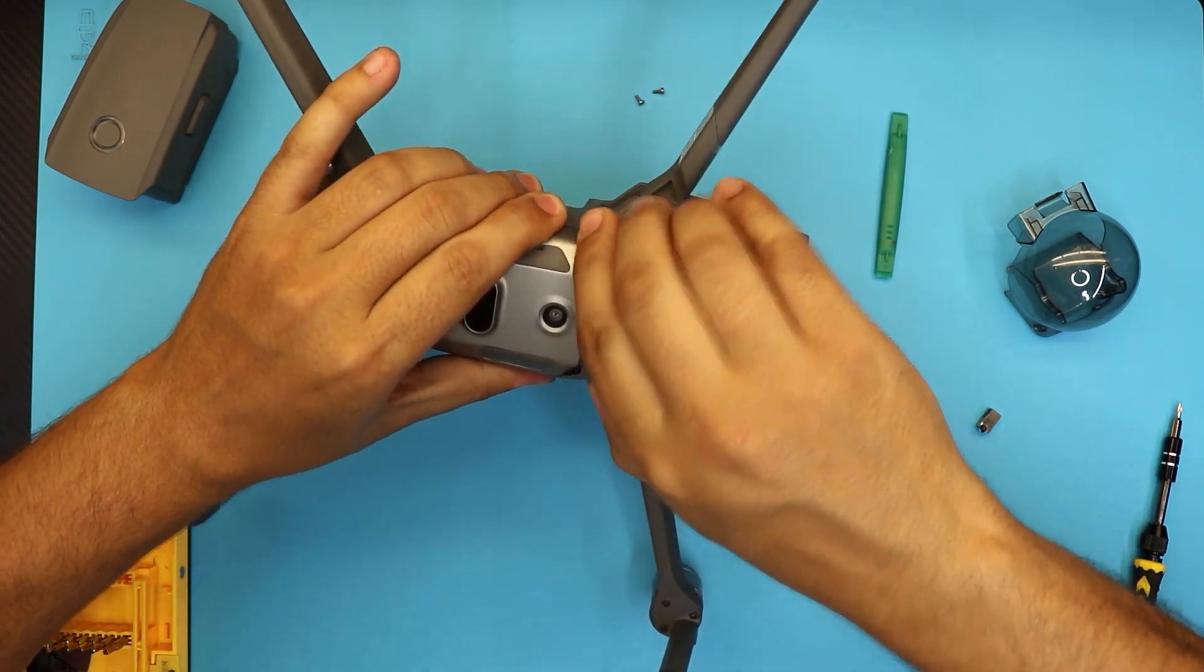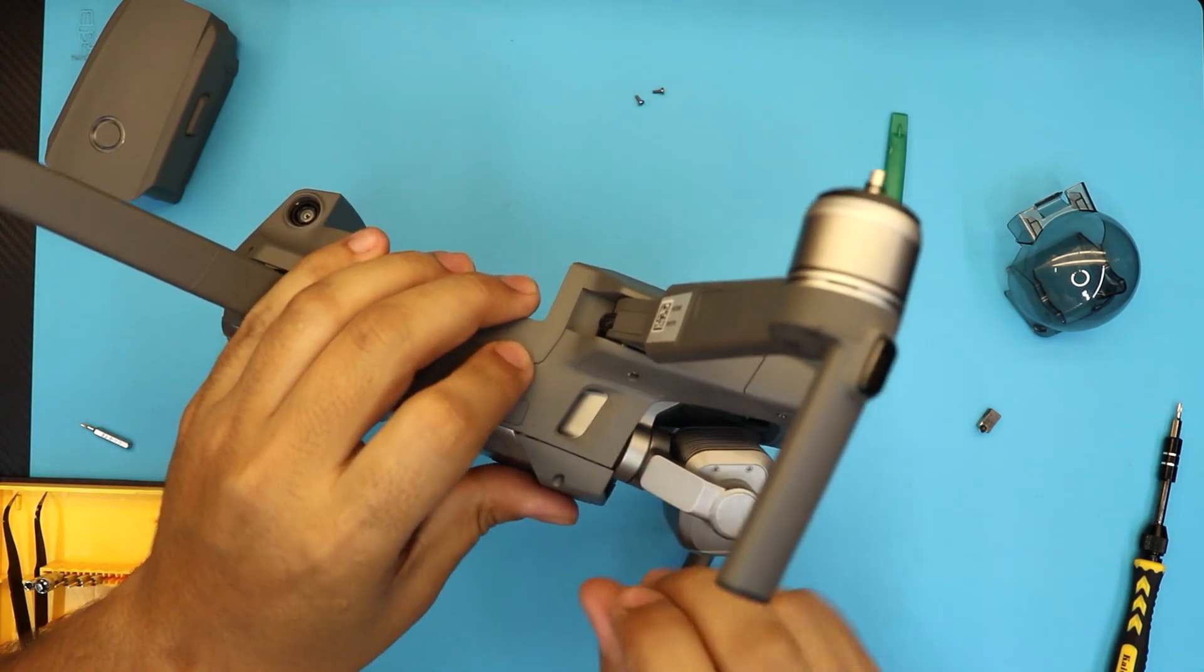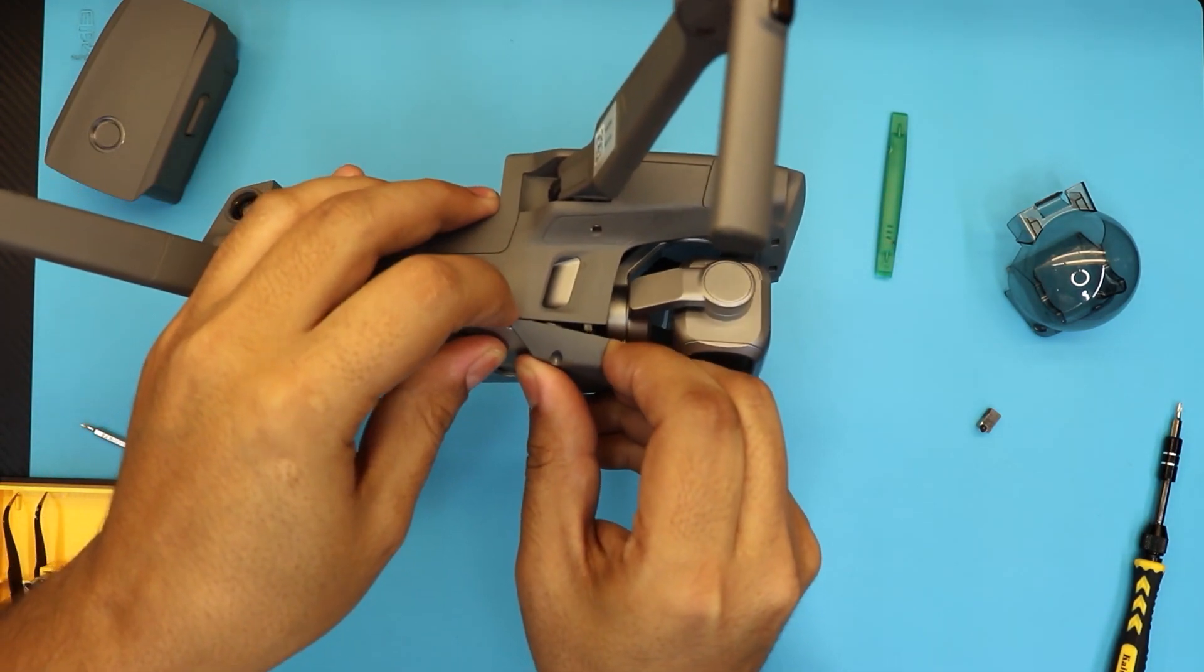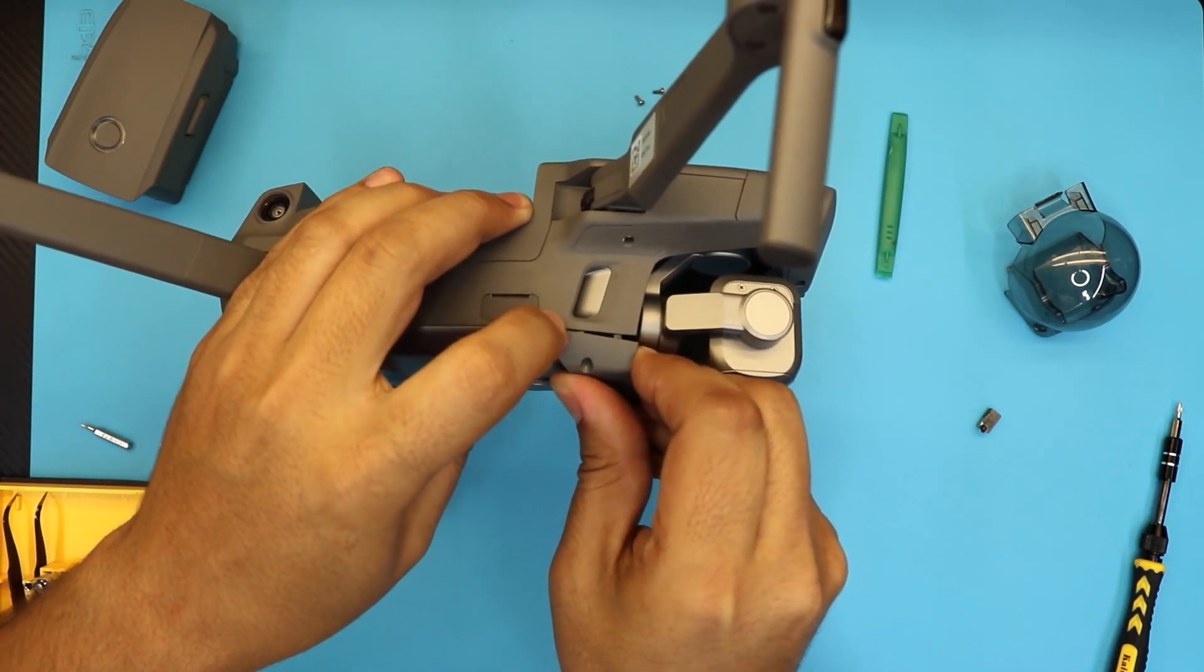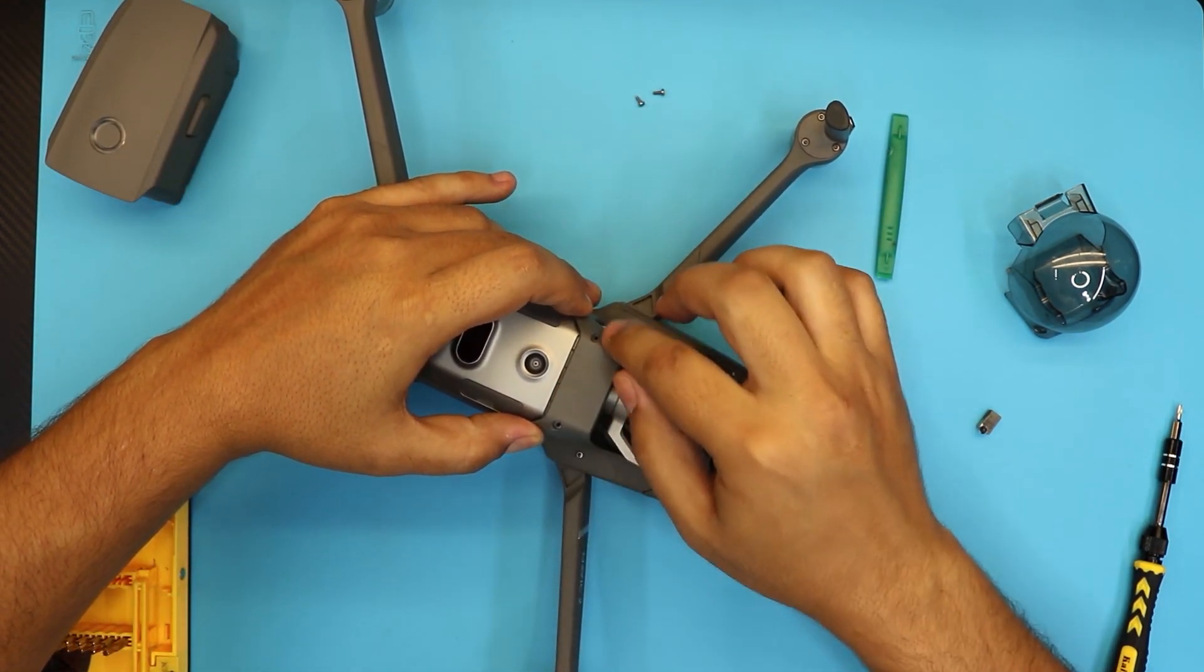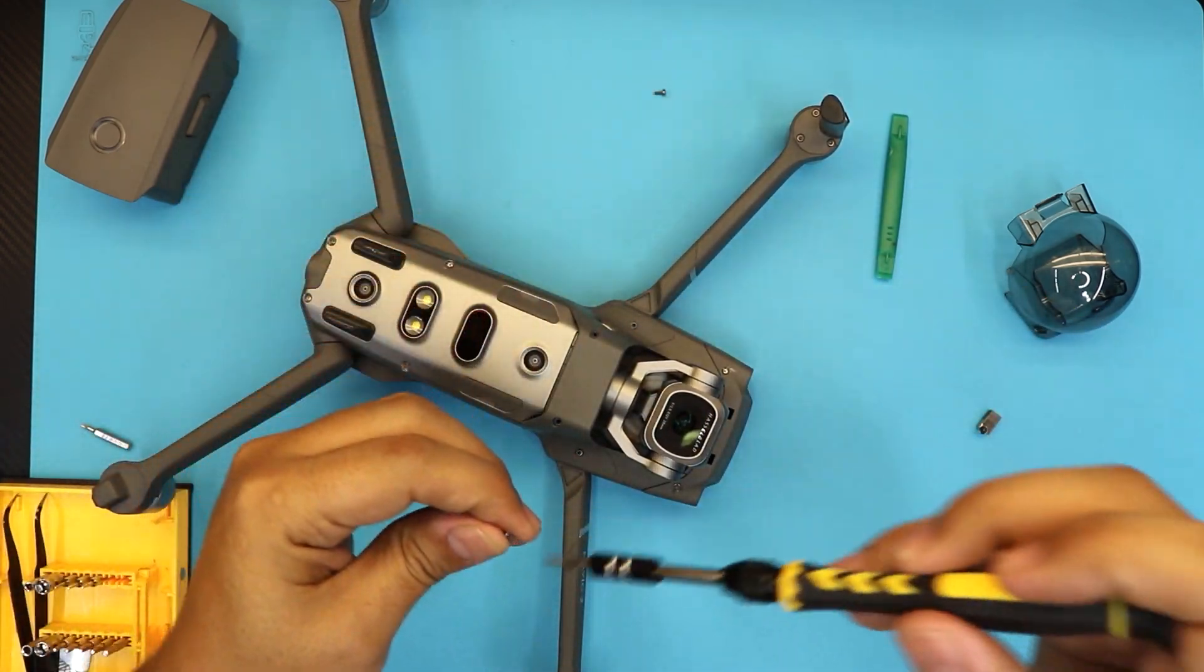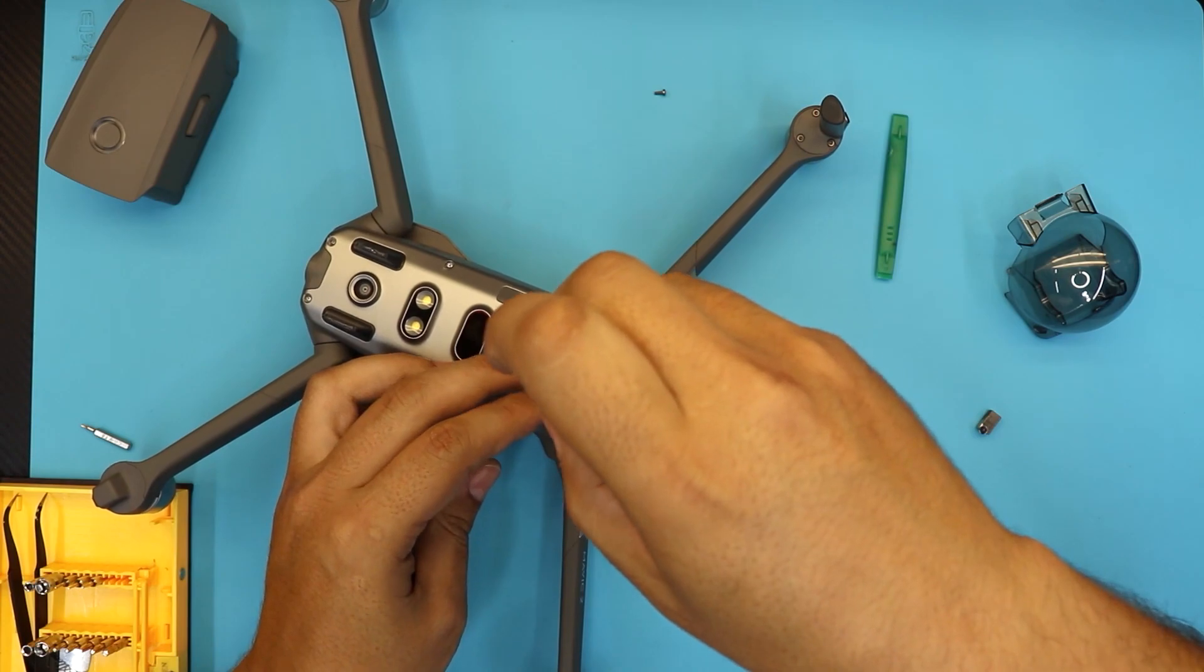There we go. Now you have to push down and make sure the lines, everything is aligned, and put the last two screws.